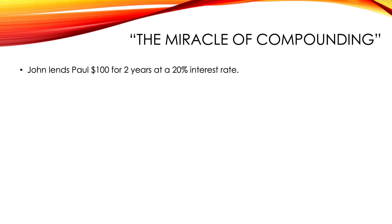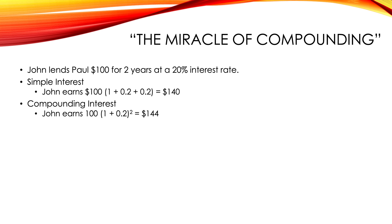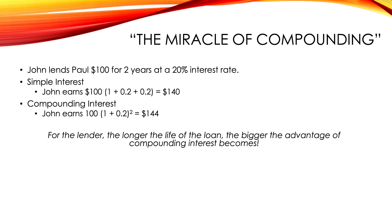So the miracle of compounding — let's look at how these compare over time. John lends Paul $100 for two years at a 20% interest rate. With simple interest, John would earn $140 — that's 1 plus 0.2 plus 0.2 times $100. With compounding interest, John earns $144. Now, that doesn't sound like a big deal — it's just a $4 difference. But the main variable in how big this difference becomes is the length of the loan. The longer the life of the loan, the bigger the advantage of compounding becomes.